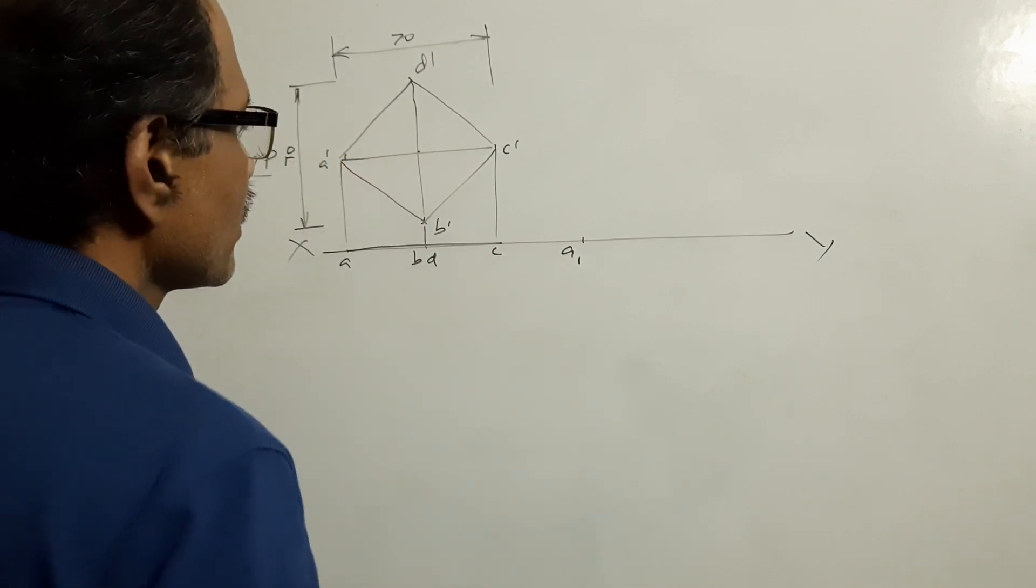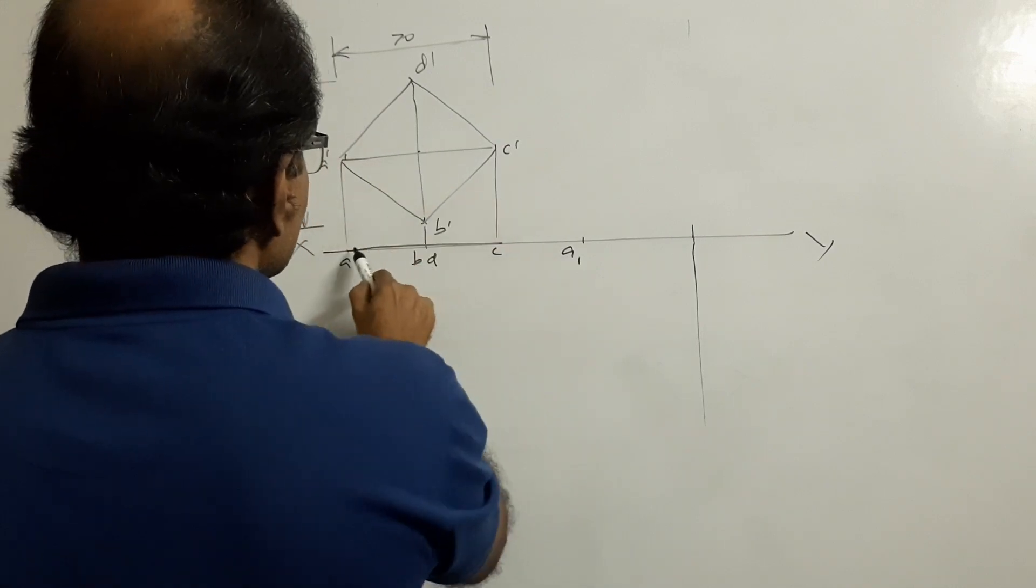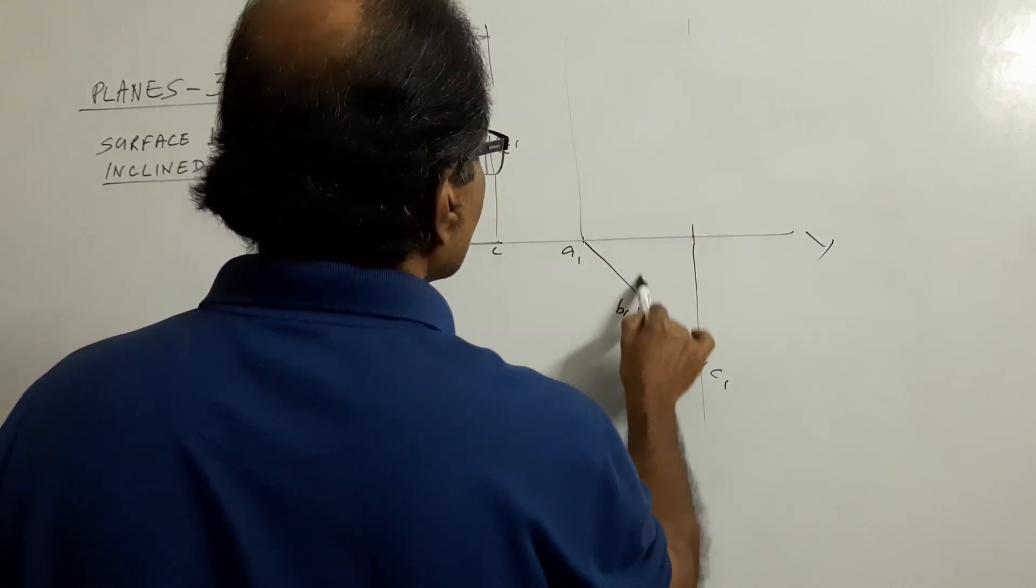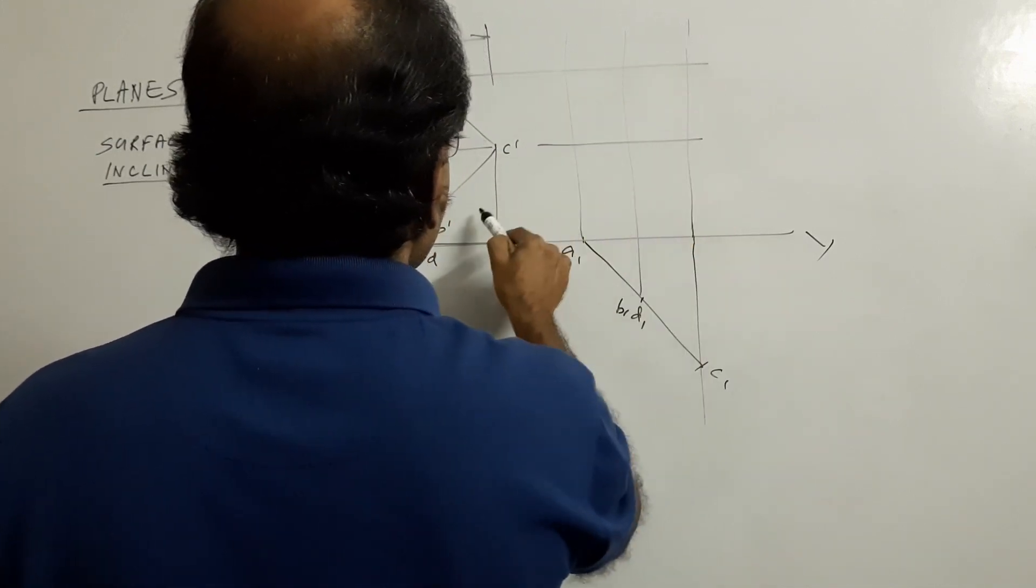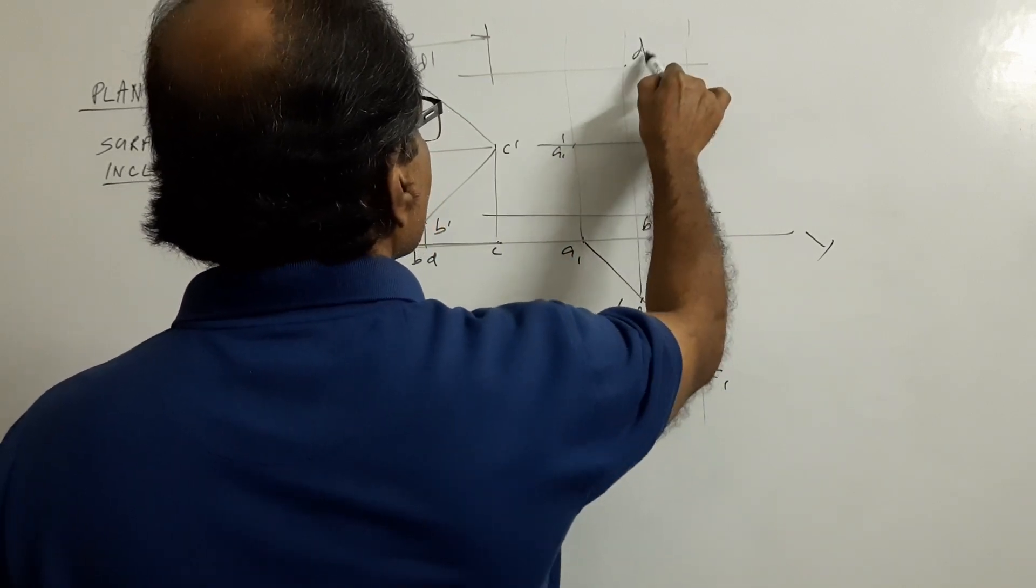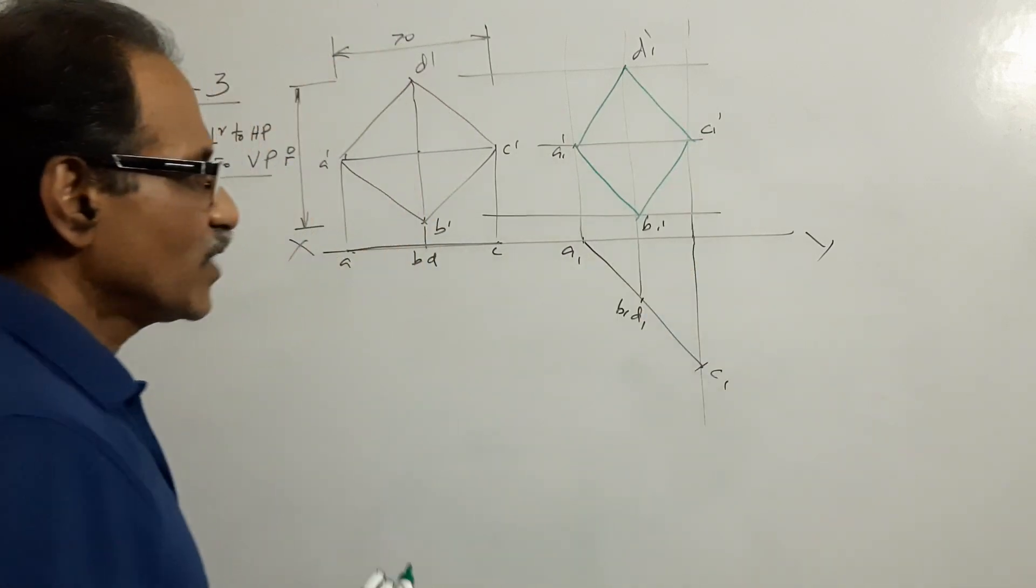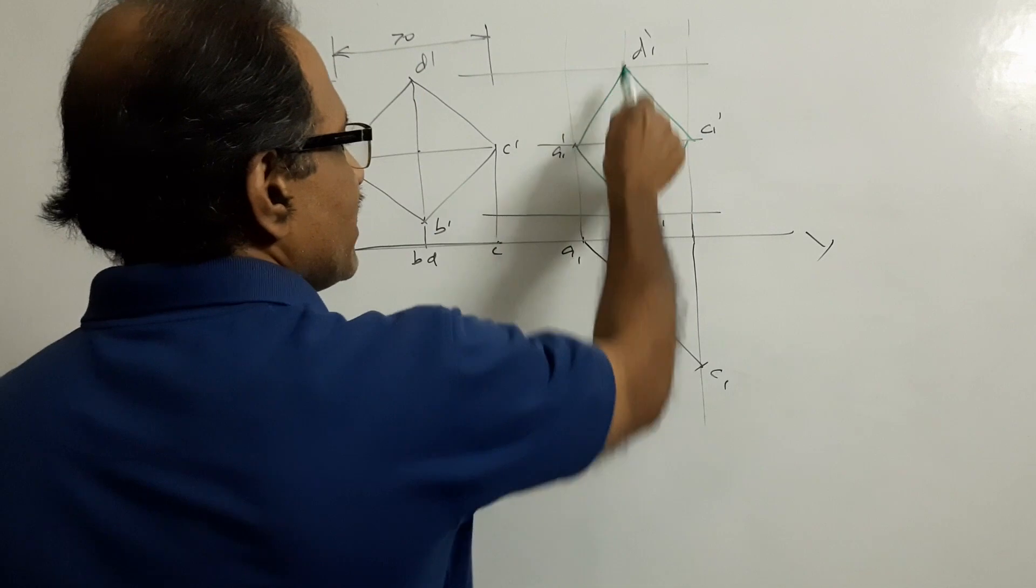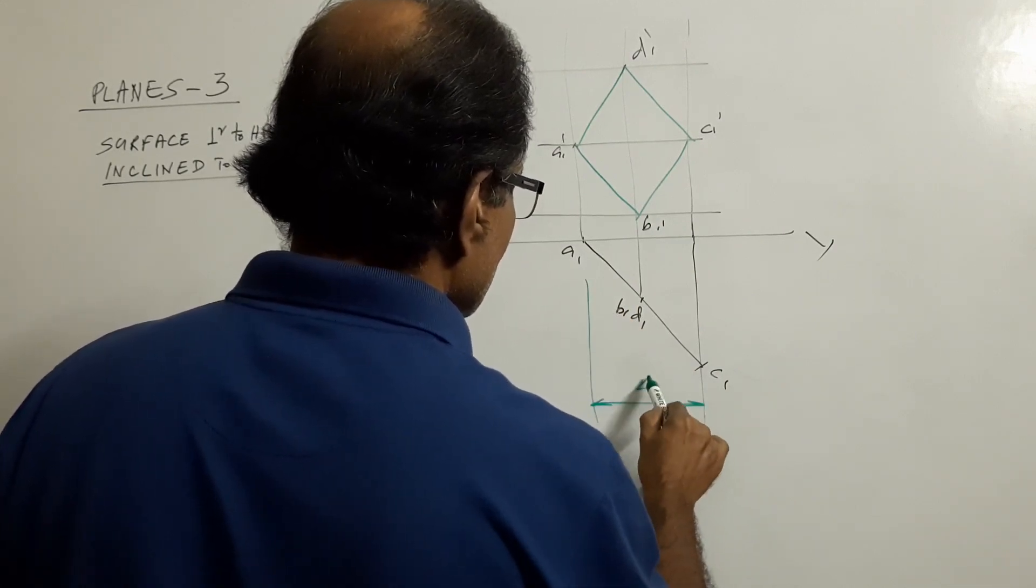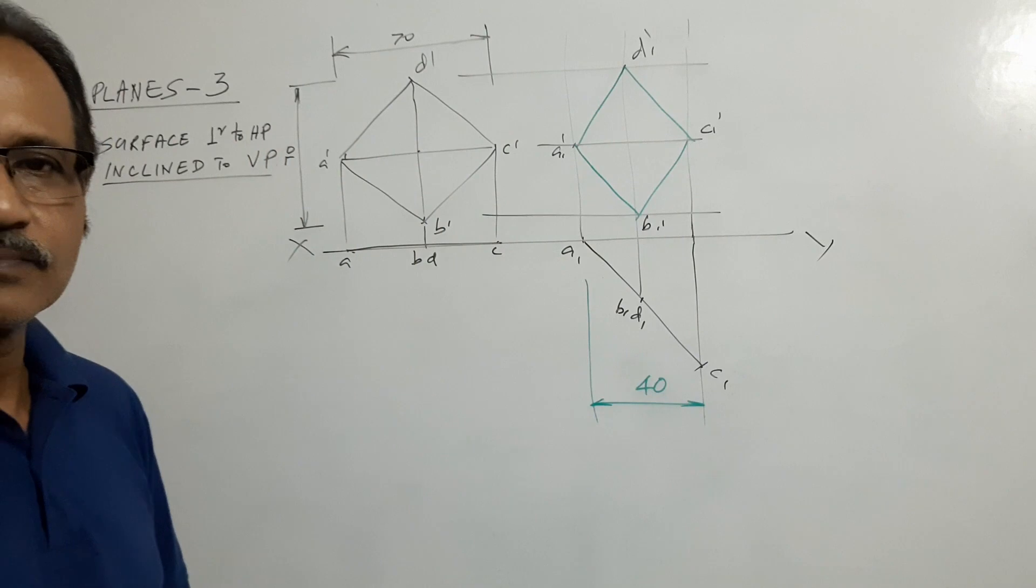70. Measure 40. Draw a vertical projector. Draw a vertical projector down. Take this plan length AC and cut a knock. C1, B1, D1. Draw a vertical projector up. Draw horizontal projectors. What do you get? A1 dash, B1 dash, C1 dash, D1 dash. Connect. What is this? This is a rhombus of 70-40 diagonals. 70 remains unaltered. 70-40. This distance is? Clear?